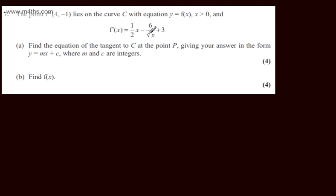f dashed of x is the gradient function. So the gradient at the point P will be f dashed of 4. So m the gradient is going to be equal to f dashed of 4. If we go ahead and do this, m will equal one half of 4 minus 6 over the square root of 4 plus 3. From this we can see that m will be equal to 2. The square root of 4 is 2, so that's going to be minus 3 plus 3. So we have now a gradient of 2.